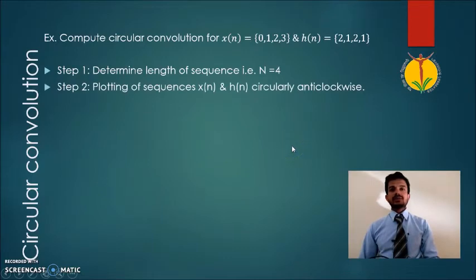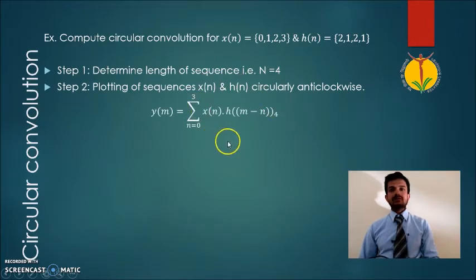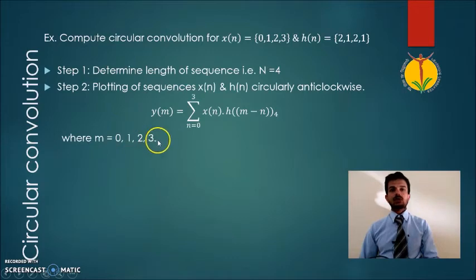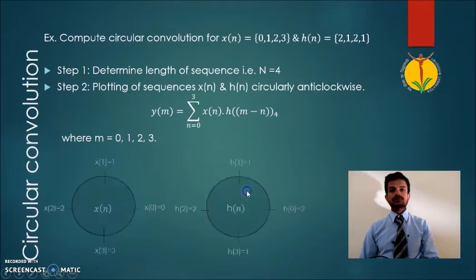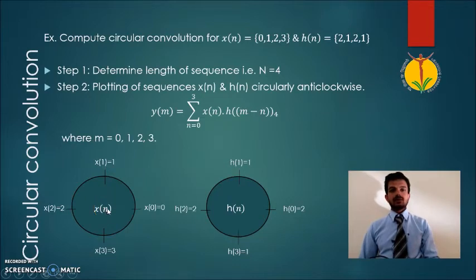After that, we plot the sequences x of n and h of n circularly in the anticlockwise direction. Using the circular convolution equation, we substitute values of m from 0, 1, 2, up to 3, since N equals 4 and m goes from 0 to N minus 1, making the last value of m equal to 3. Let us draw the two concentric circles and plot this sequence x of n along the anticlockwise direction.